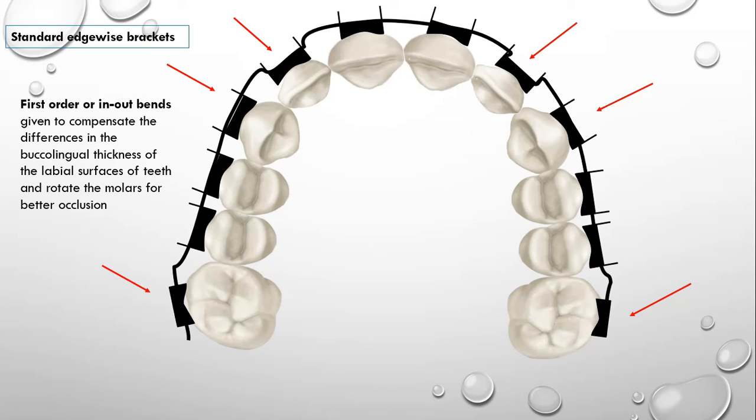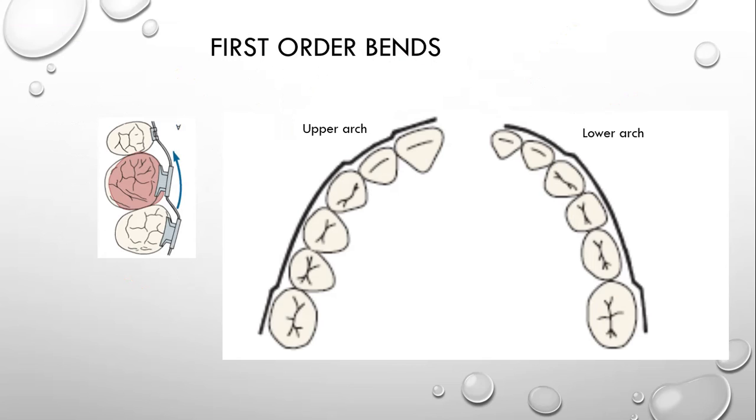This is the picture from contemporary orthodontics by William Proffit. You can see in the upper arch in and out bend for the lateral incisor and in the molar area to compensate the rotations of upper molars. Similarly, to make the canine a bit more prominent, there is again first order bend given in the lower arch in the canine area and for the molar same kind of first order bend.